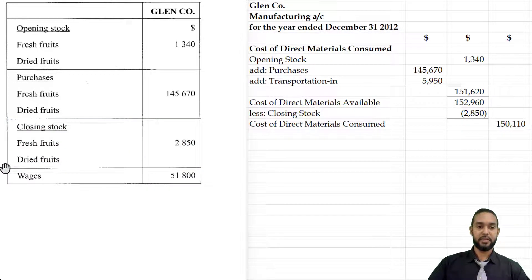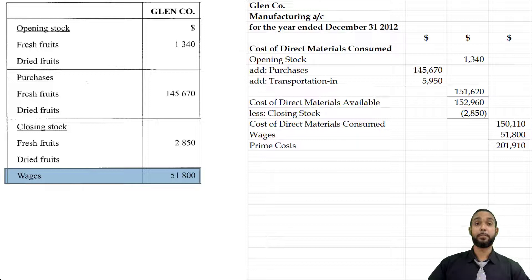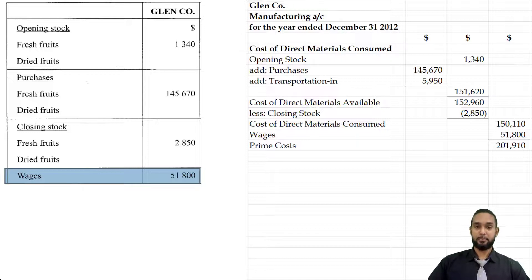Now we need to add wages. In a manufacturing setting, unless otherwise stated, wages can safely be assumed to be direct labor. So we're going to add the wages here, and there are no other direct costs for Glen Company. The sum of all direct costs gives us the total for prime cost. Just to note, there are certainly indirect wages, but because the question gave us no information to discern whether some portion of the $51,800 was direct or indirect, we have to assume it's all direct.